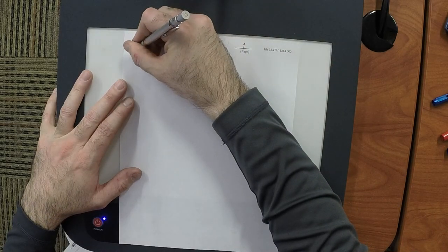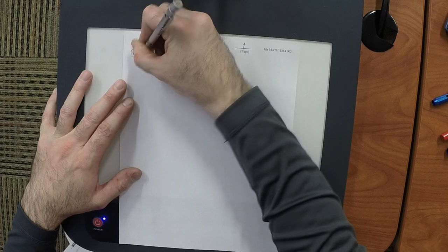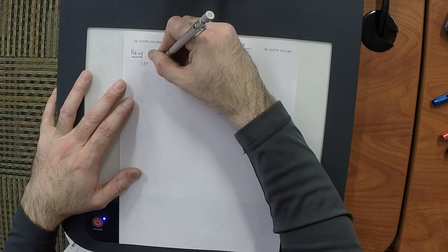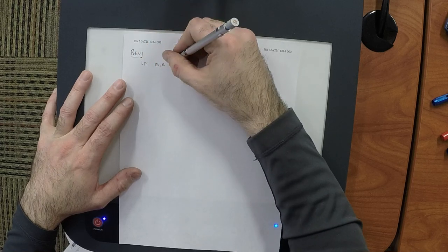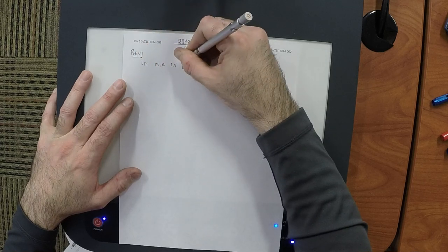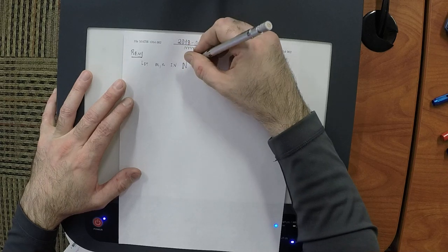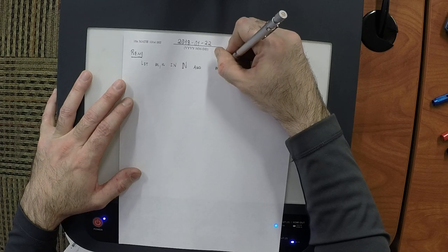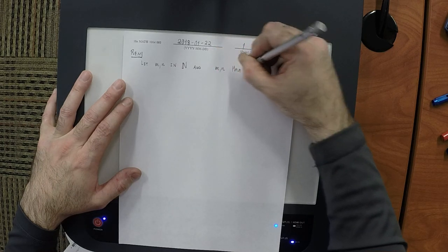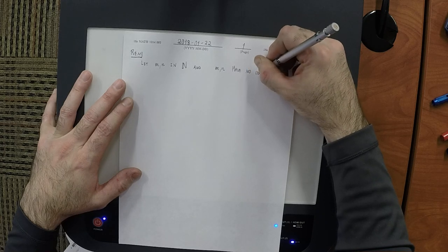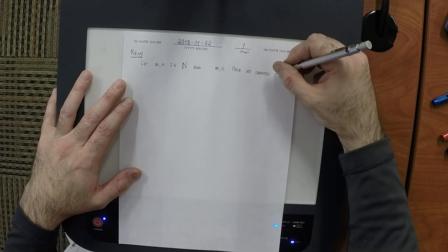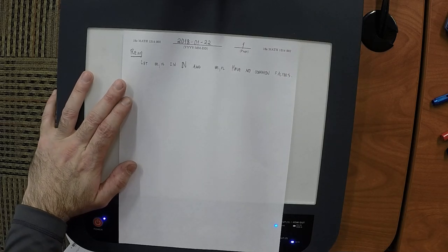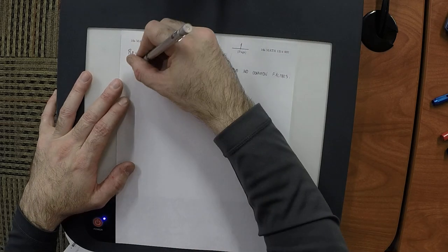So the last thing that we talked about last time was the following. Let m and n be in the naturals, and m and n have no common factors. In such a case, the following are equivalent.